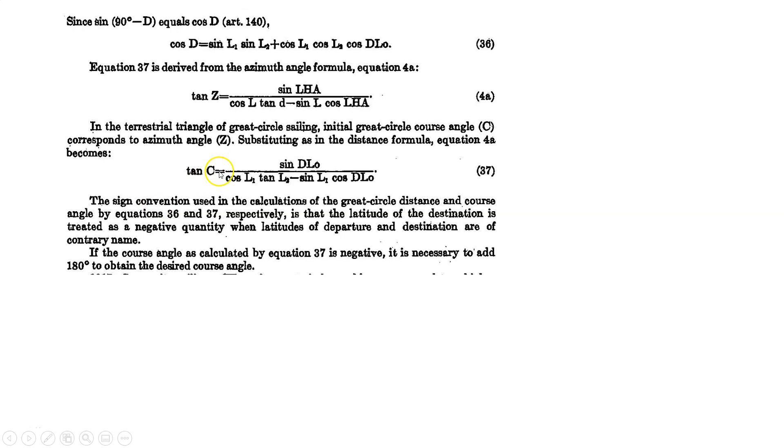Now, there's two rules written directly below formula 37 at the bottom of page 612. The first one is the sine convention used in the calculations of the great circle distance and course angle by equations 36 and 37. So this rule applies to both 36 and 37, is that the latitude of the destination is treated as a negative quantity when latitudes of departure and destination are of contrary name. What does that mean? That means we change, we cross the equator.